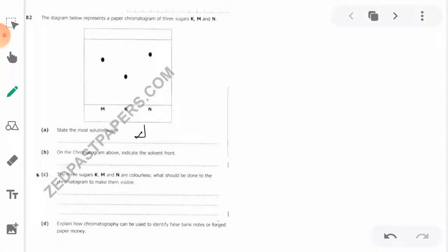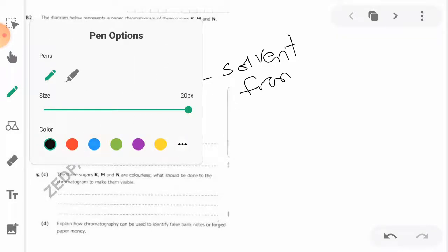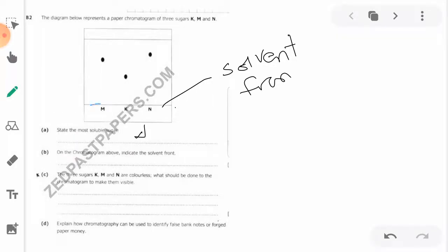On the chromatogram above, indicate the solvent front. Now, a solvent front is a line that separates the sugars from their solubilities, and that line is this line. So that's the solvent front, the same line which is indicated there.